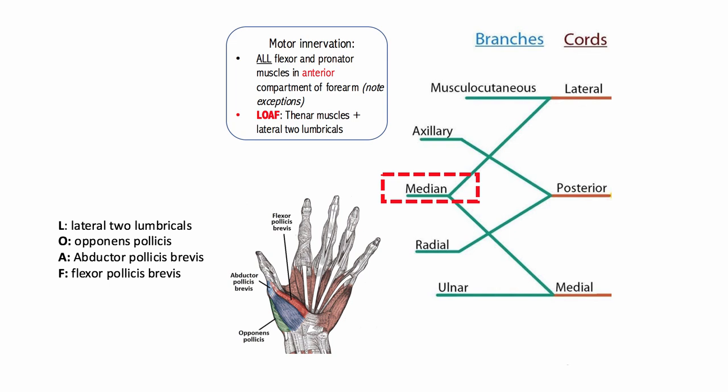L for the two lateral lumbricals, O for the opponens pollicis muscle, A for abductor pollicis brevis and F for flexor pollicis brevis. The names aren't super high yield here, but remember the OAF or OF muscles together are called the thenar muscles, and the median nerve innervates all of them to help abduct, oppose, and flex the thumb.